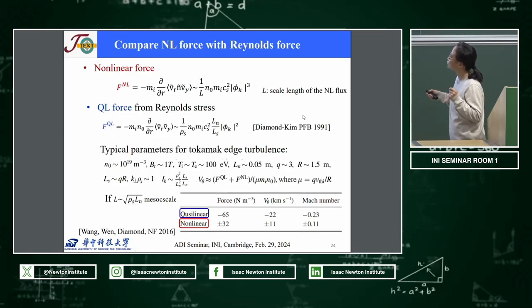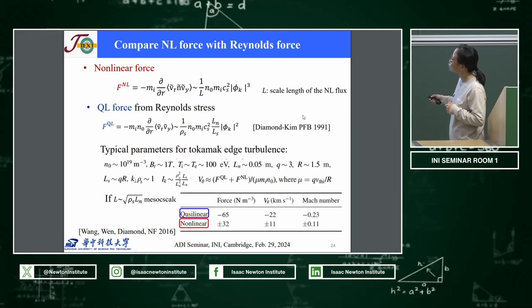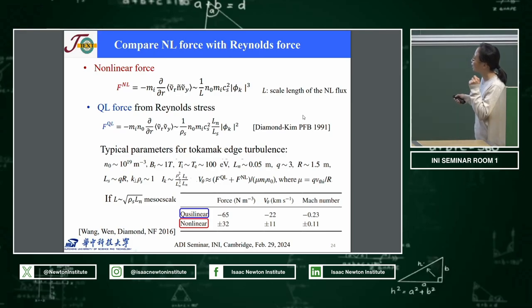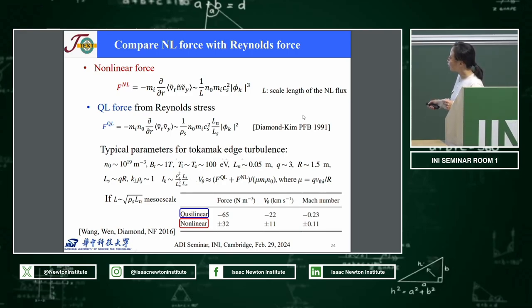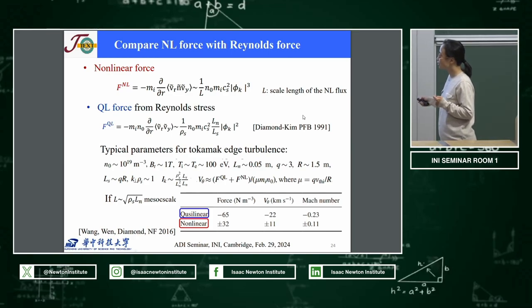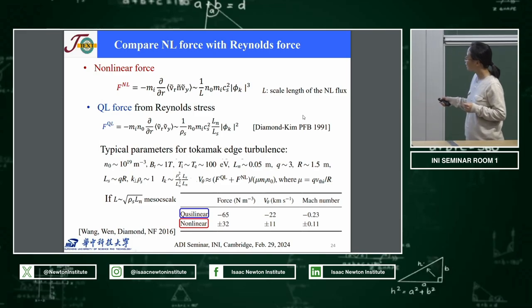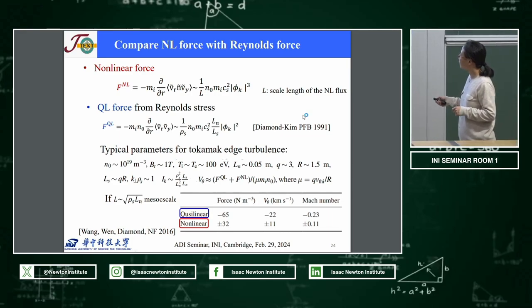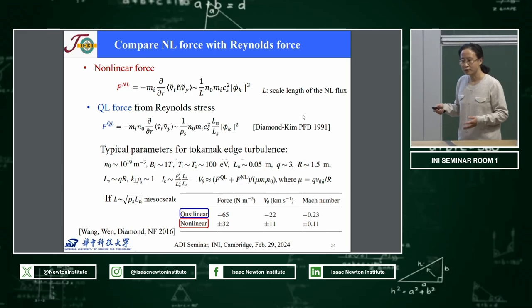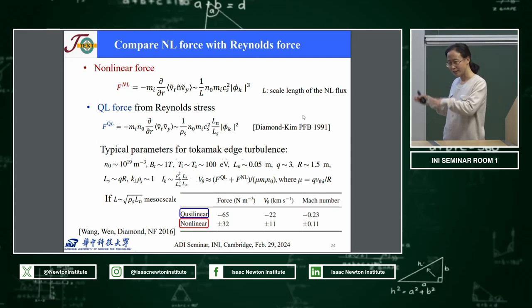Using typical parameters for tokamak edge turbulence, we can estimate and compare the quasi-linear force and the nonlinear force. Although the nonlinear force is a little bit smaller than the quasi-linear one, they are of the same order. This means the nonlinear force driving zonal flow is important in tokamak edge plasmas.